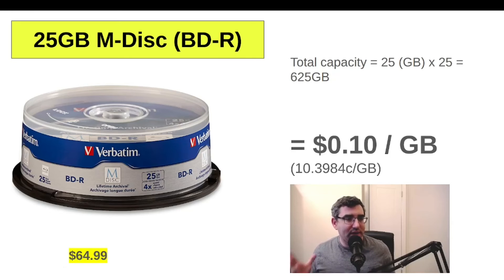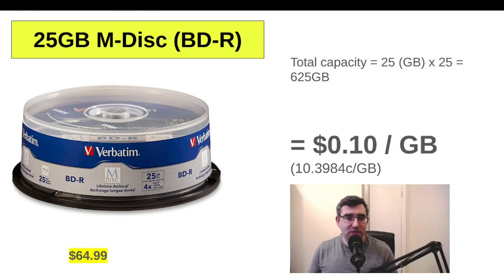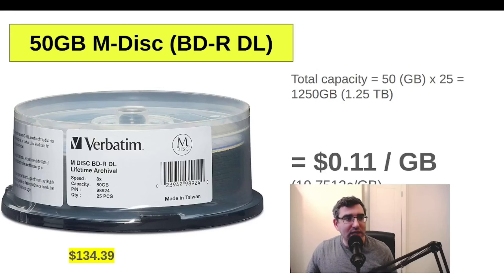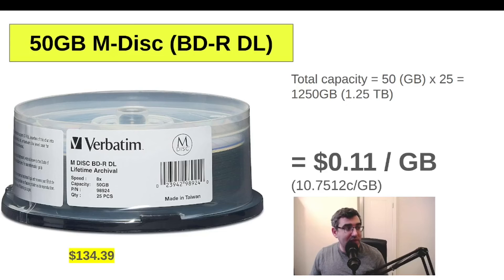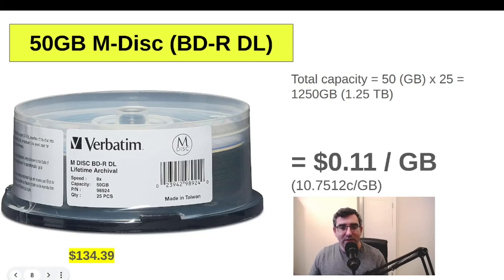Now let's look at M-Discs. The 25GB M-Disc is $64.99 for a 25-disc spindle. Total capacity: 25 × 25 = 625GB. Price per gigabyte: 10.4 cents. Next, the M-Disc dual layer 50GB product is $134.39. Total capacity: 50 × 25 = 1,250GB (1.25TB). Price per gigabyte: 10.75 cents, rounding up to 11 cents. So it's marginally more expensive per gigabyte if you buy the 50GB product, but the difference is less than one cent per gigabyte.